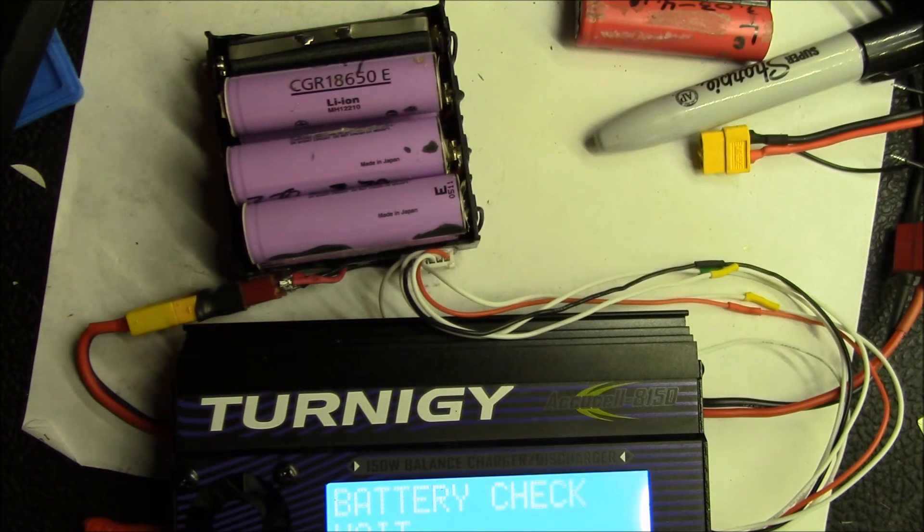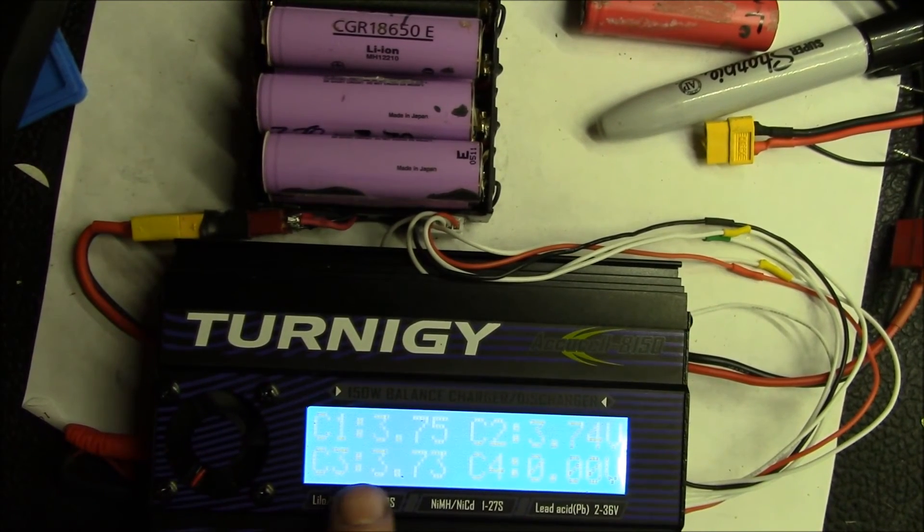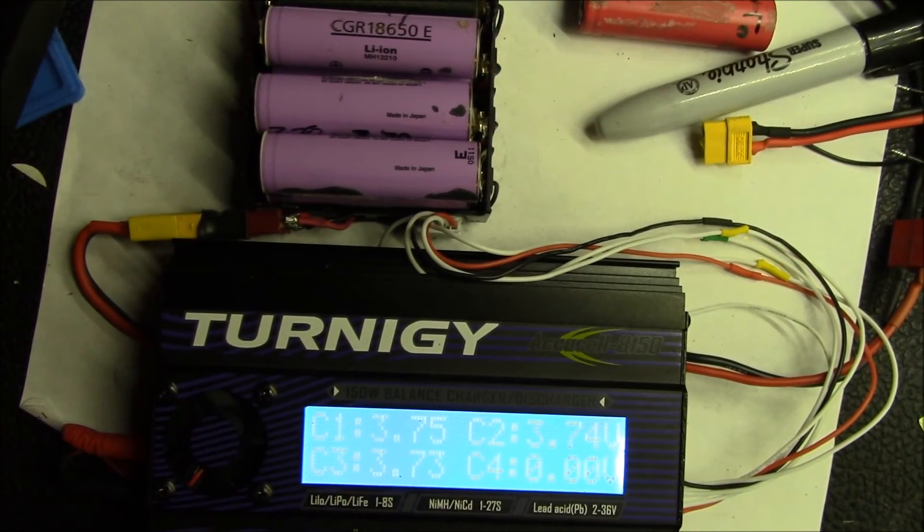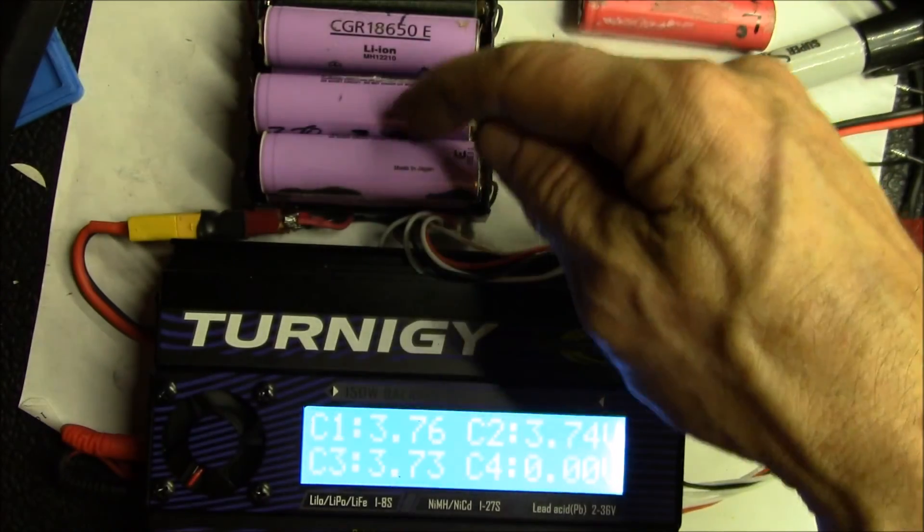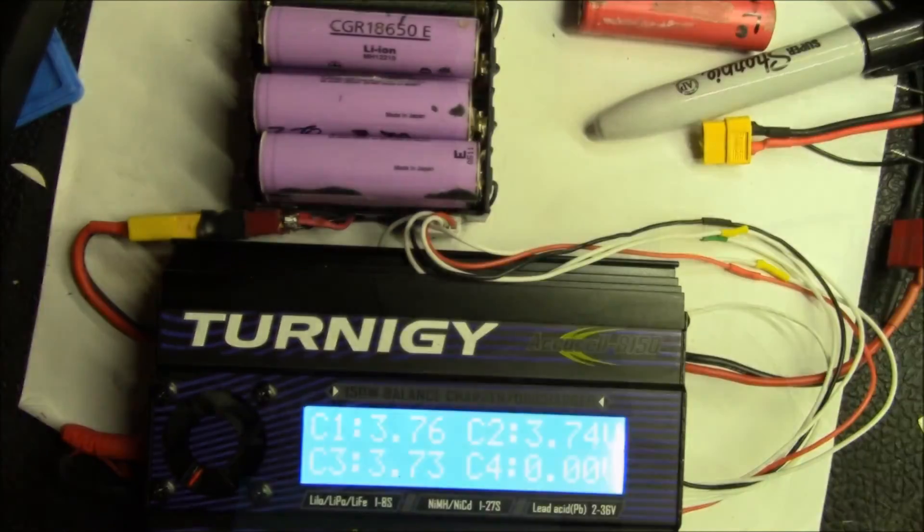And this time I want to do 3S. So battery check. Three series. It picked up the right value there. I think that's showing up there. But you can see now I've got just 3S. So I've got three actual cells, and then I've got one dummy in there.